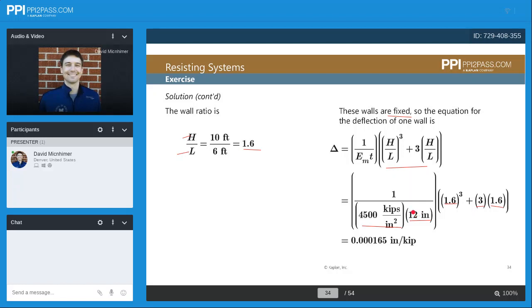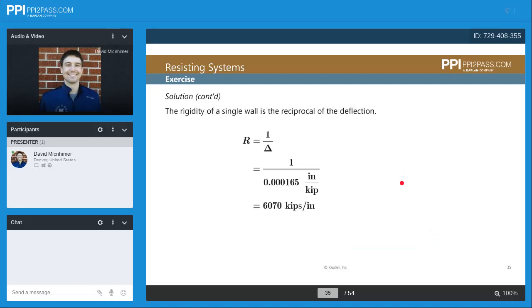In this case, the deflection of the wall is going to be 0.000165 inches per kip. The rigidity of a single wall is the reciprocal of deflection. So we're going to take 1 over the deflection, and we end up with 6,070 kips per inch for the rigidity.